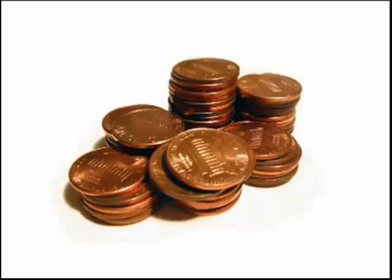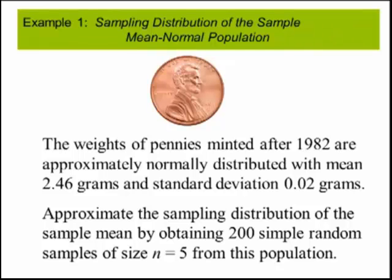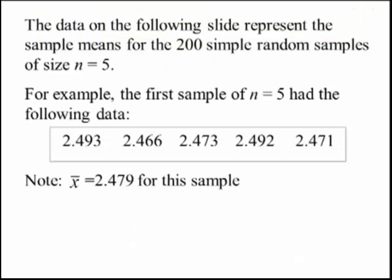In this example, we're going to use pennies. The weights of pennies minted after 1982 are approximately normally distributed with a mean of 2.46 grams and a standard deviation of 0.02 grams. We approximate the sampling distribution of the sample means by obtaining 200 simple random samples of size 5. We weigh 5 pennies, find the average — that's our X-bar. We do this 200 times, giving us 200 different sample means.